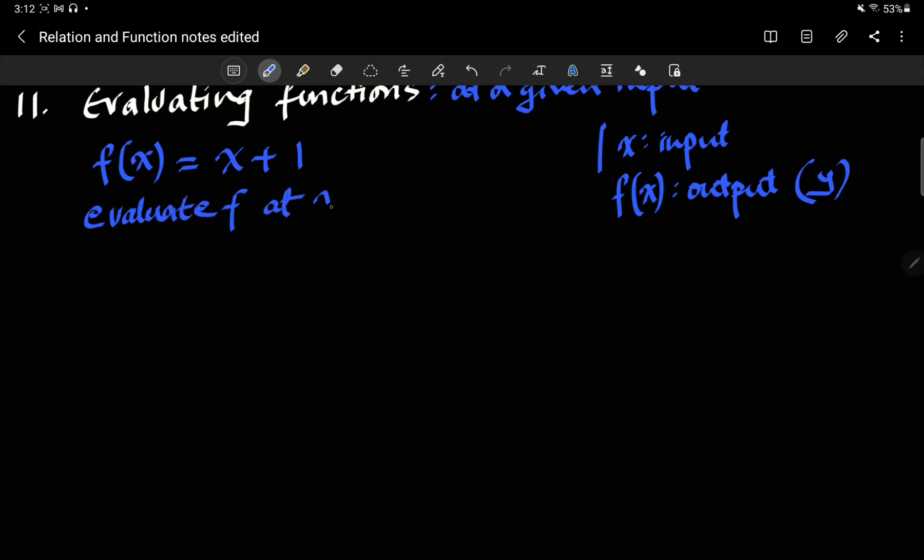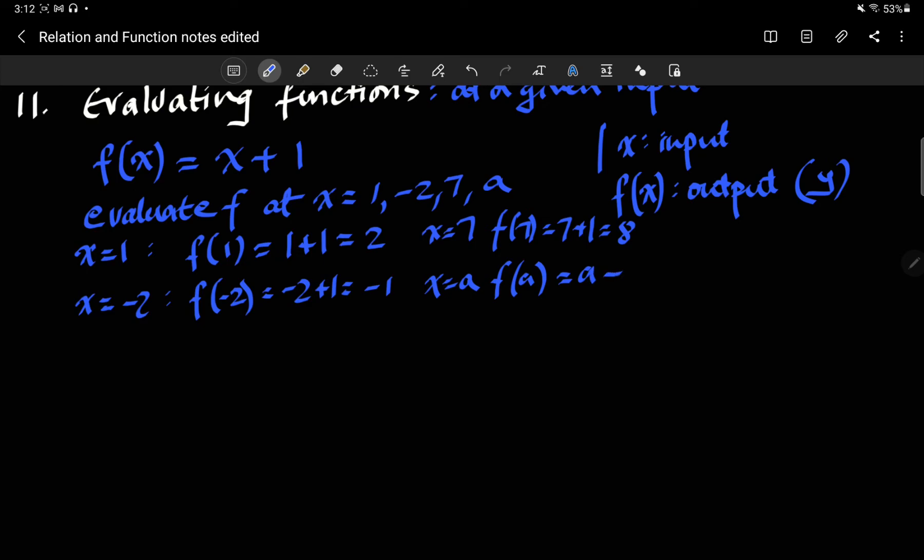So this is what I'm going to do. If x is 1, I just replace x by 1, so f(1) = 1 + 1 = 2. If x is -2, I replace x by -2, so f(-2) = -2 + 1 = -1. If x is 7, I replace x by 7, so f(7) = 7 + 1 = 8. Now the last example, x is a, I just replace x by a, so this is a + 1, which cannot be further simplified.